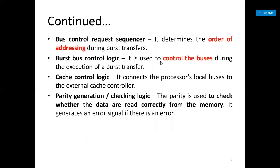The bus control request sequencer determines the order of addressing during burst transfer. The burst bus control logic is used to control the buses during the execution of burst transfers. Cache control is used to process local buses to the external cache controller. The parity generation and checking logic is used to verify whether data is read correctly from memory, and generates an error signal if there is an error.